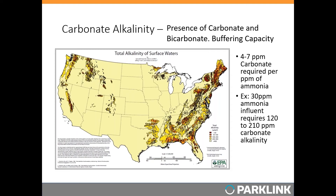Alkalinity is essential for autotrophic nitrifiers since carbonates and bicarbonates are their carbon source, and the alkalinity helps neutralize acids produced in the first step of nitrification — the oxidation of ammonia to nitrite. Nitrifiers typically need 4–7 parts per million of carbonate per 1 part per million of ammonia entering the plant. For a standard municipal plant receiving 30 ppm of ammonia in the influent, that requires about 120–210 ppm of alkalinity. An EPA map shows carbonate alkalinity of surface water across the country, illustrating that different areas may have lower carbonate alkalinity, which can negatively affect nitrification.